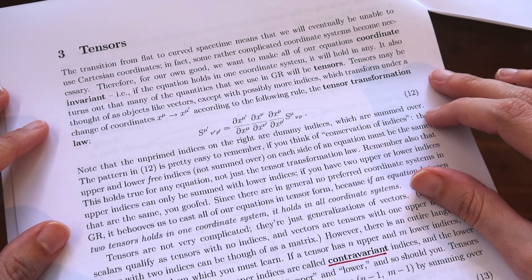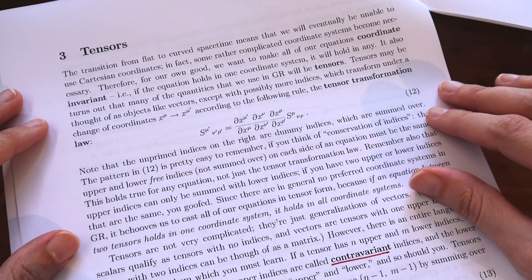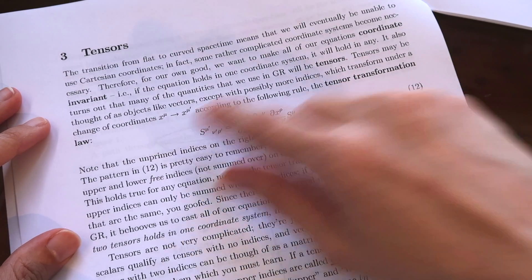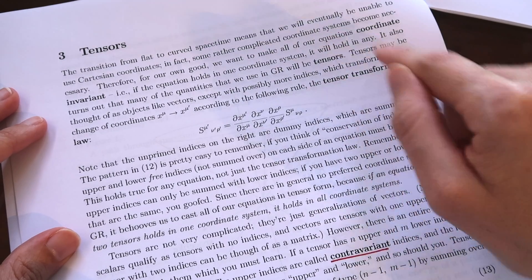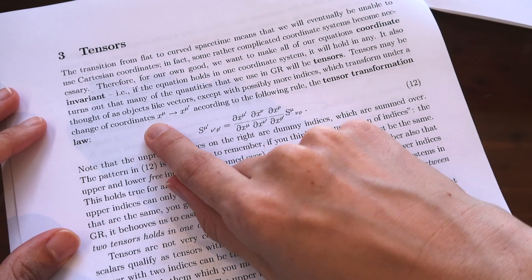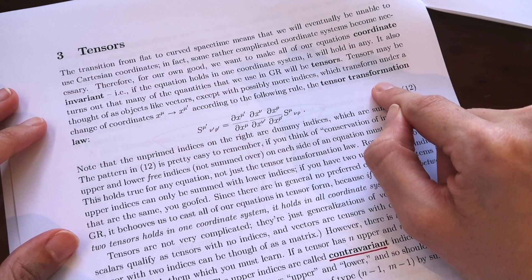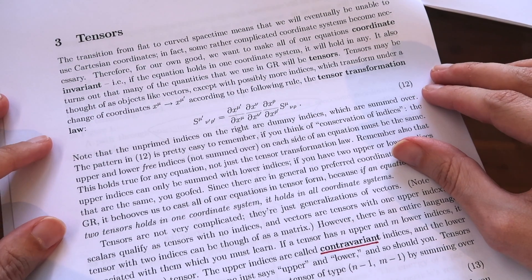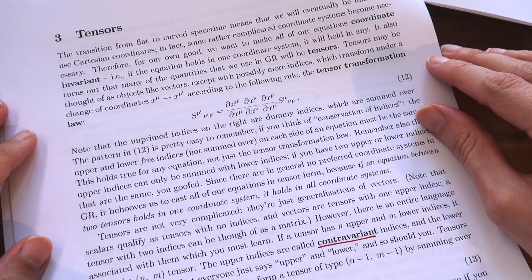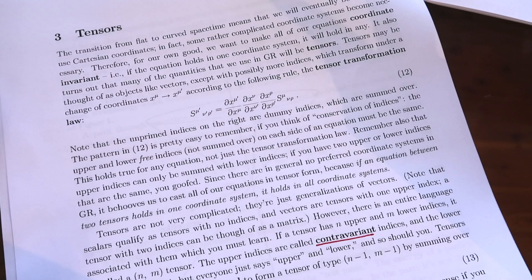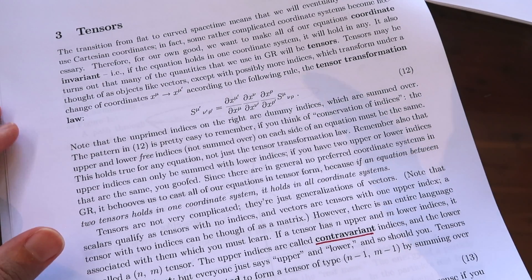Once you get to the topic of tensors it kind of becomes make or break for you because they're really important. It says here that tensors may be thought of as objects like vectors which transform under a change of coordinates according to the following rule called tensor transformation law. So tensors are really useful when you need to do changes of coordinates but why would we be doing changes of coordinates in general relativity, sort of you know what are we up to here?